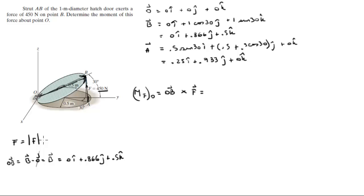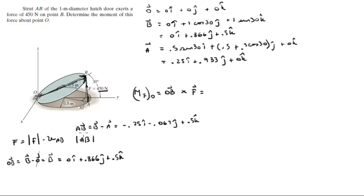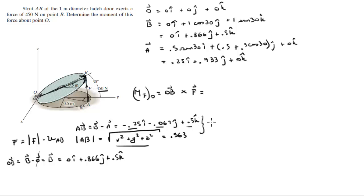F is given by the magnitude of 450 N times a unit vector going from A to B. To find this unit vector, we first find vector AB = B − A = −0.25i − 0.067j + 0.5k. The magnitude of AB is found by taking the square root of x² + y² + z², which comes out to be 0.563.